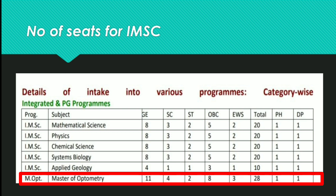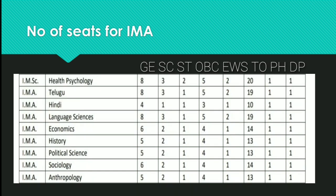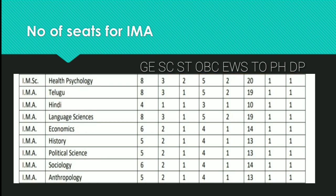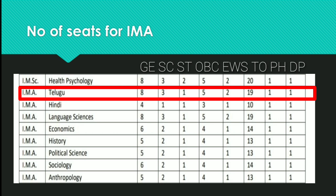Number of seats for Integrated MA courses: In Psychology — General 8, SC 3, ST 2, OBC 5, EWS 2, Total 20, PH 1, Defense 1. In Integrated MA Telugu — General 8, SC 3, ST 1, OBC 5, EWS 2, Total 19, PH 1, Defense 1.